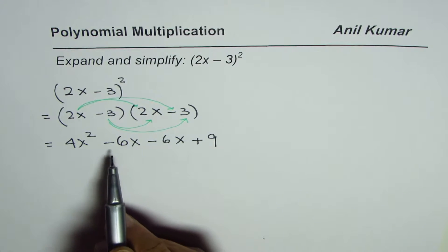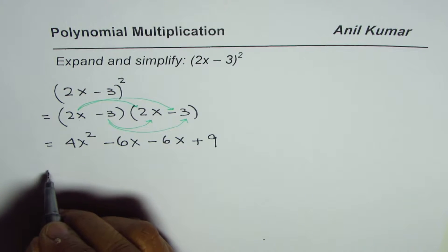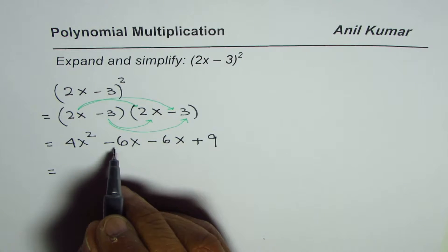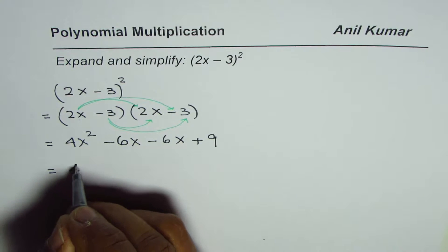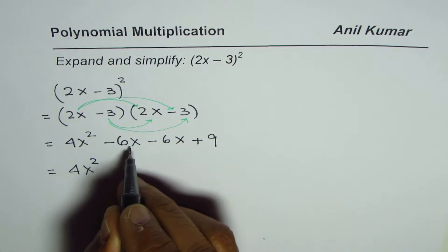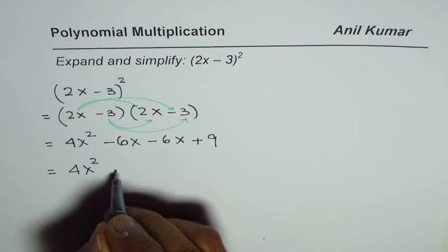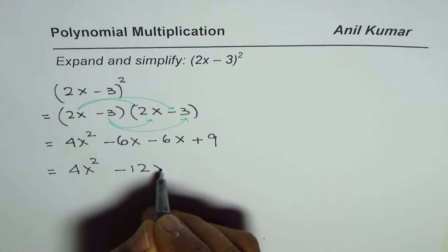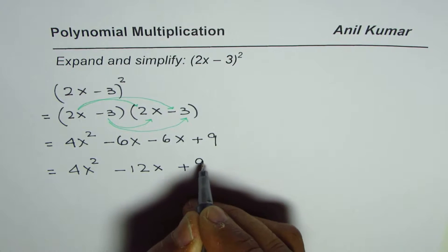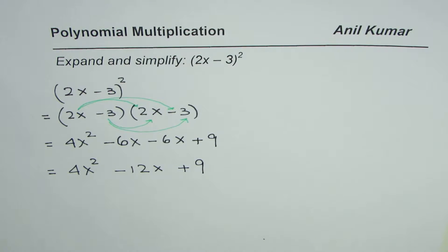Whenever you do this, you may get some like terms. So now at this stage, we'll combine the like terms. So we have 4x² - 6x and -6x is -12x + 9. So that is how you can find square of a binomial. This is the way to do it.